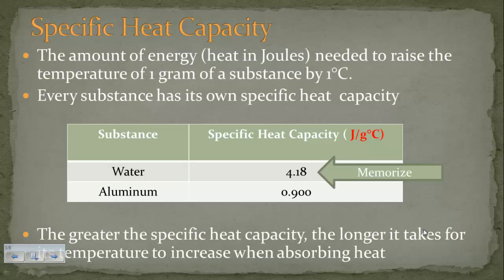The heat from the burner heats up the water and the aluminum pot, and those two substances require different amounts of energy. That is what specific heat capacity is: the amount of energy needed to raise the temperature of one gram of a substance one degree Celsius. The unit for energy is joules, represented by a capital J.